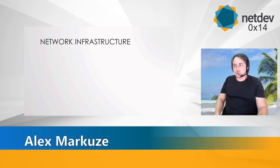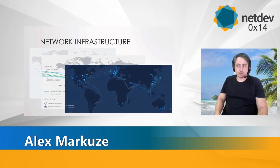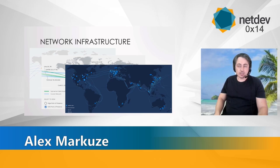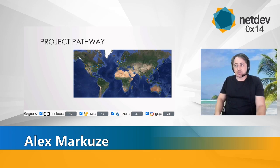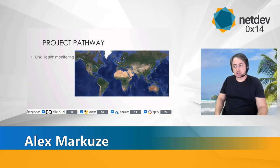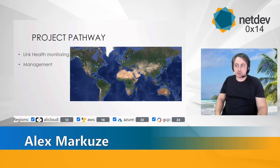Each of the big three clouds — AWS, GCP, and Azure — have their own globe-spanning network infrastructure. It's possible to connect remote regions almost exclusively on existing cloud infrastructure, and that's exactly what we did. We built a separate link health monitoring system, a management system for deploying and managing overlay networks, and a TCP split proxy box.